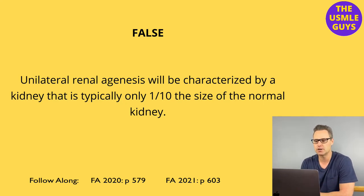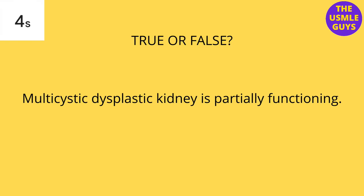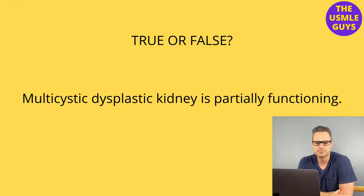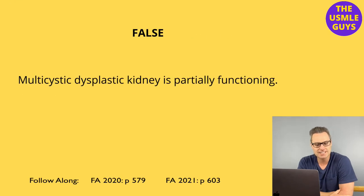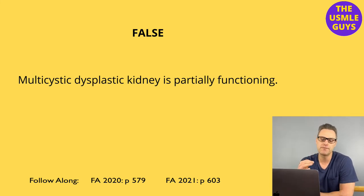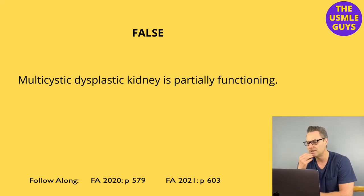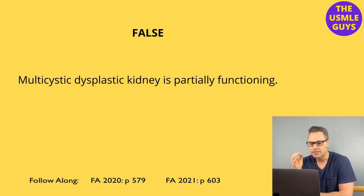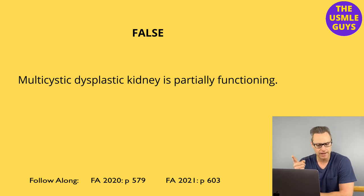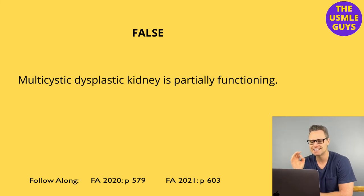Next question — this is false. The kidney in this case is non-functioning. The cause is the ureteric bud failing to induce differentiation of the metanephric mesenchyme. This causes the kidney to become non-functional and also causes it to consist of cysts and connective tissue. Remember that this is typically only seen unilaterally, but if it happens bilaterally, we can get Potter sequence.